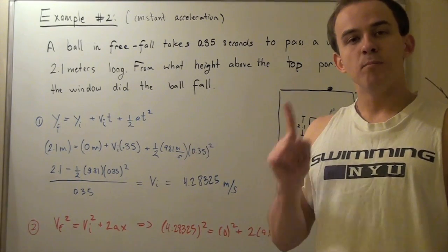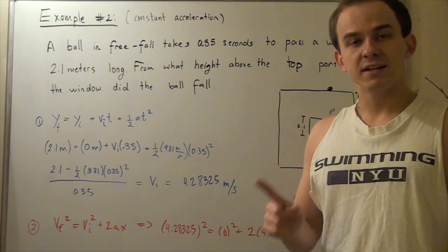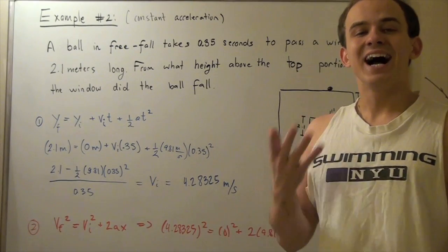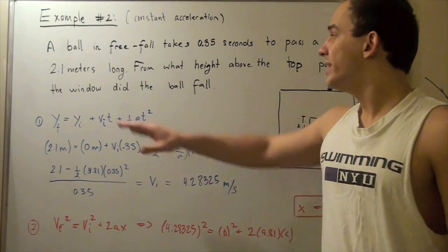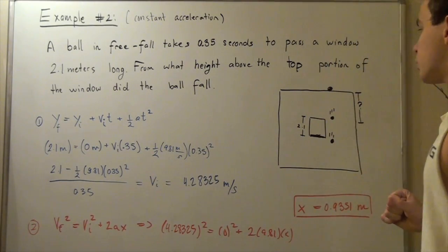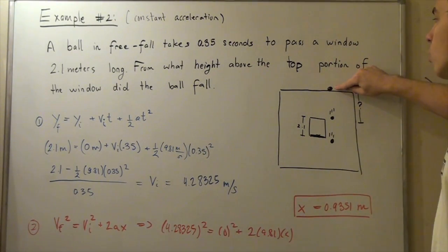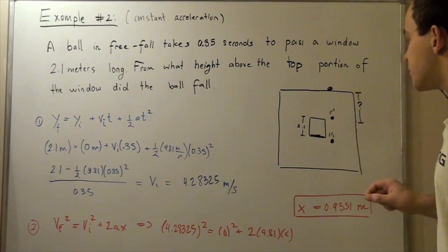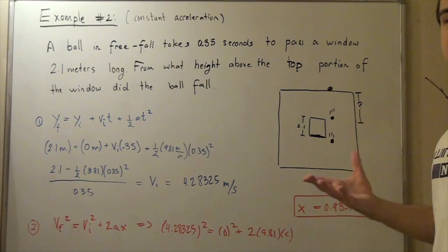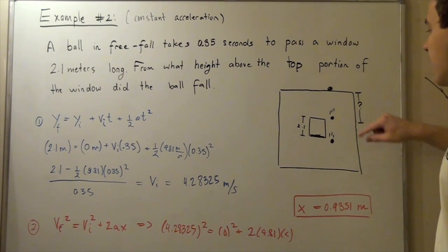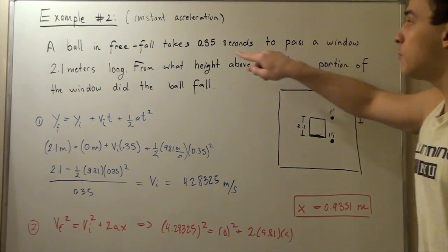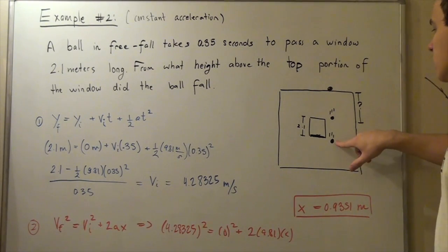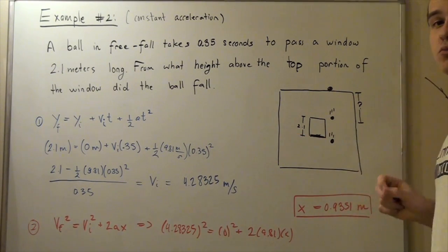Let's look at the following example. A ball in free fall takes 0.35 seconds to pass a window that's 2.1 meters long. We want to find from what height above the top portion of our window did the ball fall.